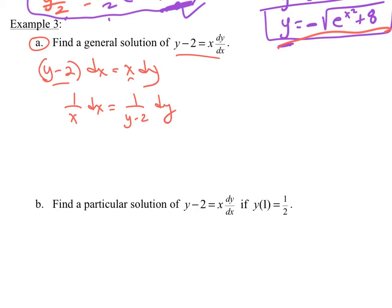I needed to separate my variables. I need to get x's on one side and y's on the other. So now I can integrate. So this would be ln|x| + c is equal to ln|y-2|. I only need the plus c on one side because if I put on both sides I just combine it all into one on one side anyways.